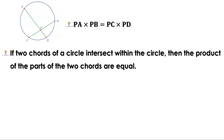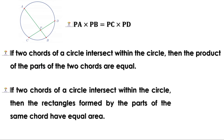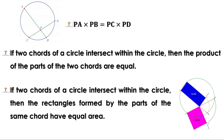If two chords of a circle intersect within the circle, then the product of the parts of the two chords are equal. If two chords of a circle intersect within the circle, then the rectangles formed by the parts of the same chord have equal area.